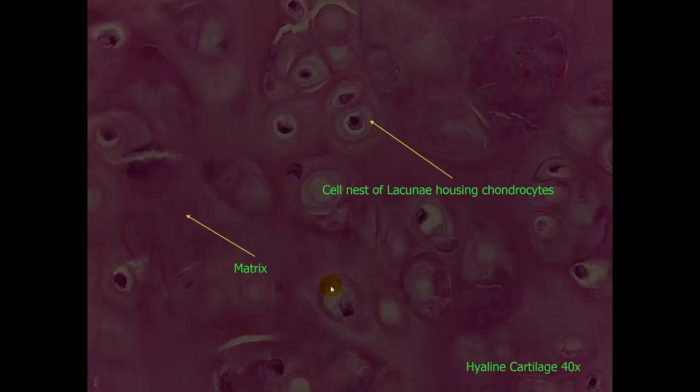Next slide is a higher magnification, 40x objective. Here is the matrix clearly seen in between the cell nests of lacunae that have the chondrocytes themselves. Pay attention to this matrix, because the differentiation between the hyaline cartilage and the elastic and fiber cartilage is what is contained in this matrix, in between these lacunae.